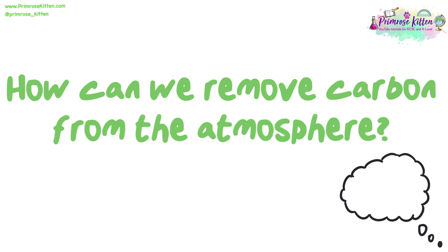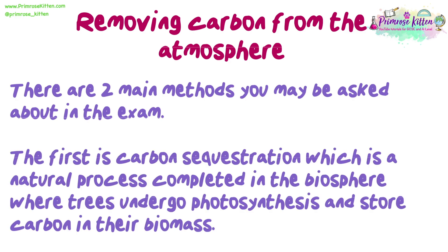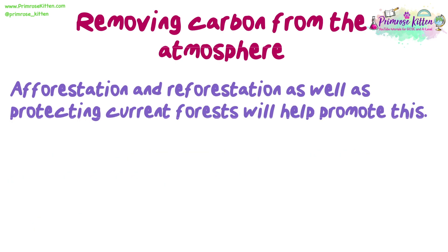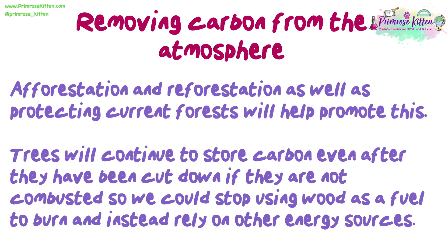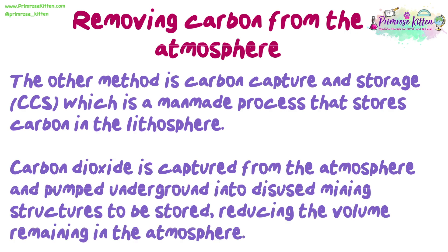How can we remove carbon from the atmosphere? There are two main methods. The first is carbon sequestration, which is a natural process completed in the biosphere where trees undergo photosynthesis and store carbon in their biomass. Afforestation and reforestation, as well as protecting current forests, will help to promote this. Trees will continue to store carbon even after they have been cut down if they are not combusted. The other method is carbon capture and storage, a man-made process that stores carbon in the lithosphere by capturing carbon dioxide from the atmosphere and pumping it underground into disused mining structures.